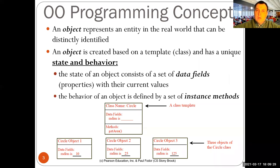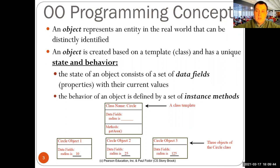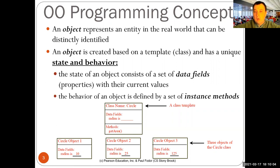For object-oriented programming, there is a visual language called UML — Unified Modeling Language. One type of UML visual language is called class diagrams. In class diagrams, you can represent a class with a rectangle that has the class name, followed by the data fields in a separate area, and followed by the instance methods — the methods that are specific for every individual object.